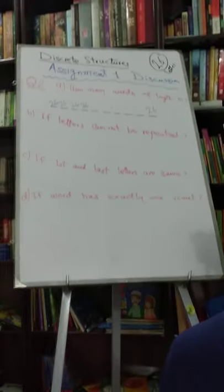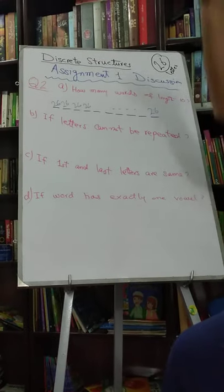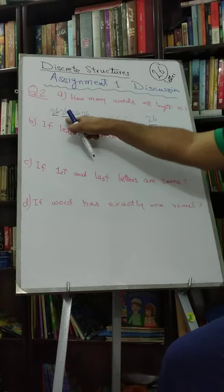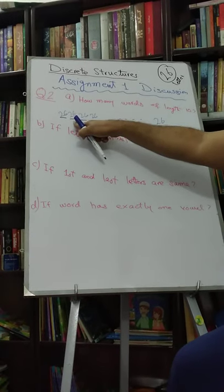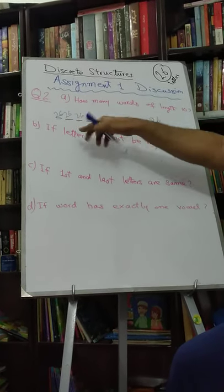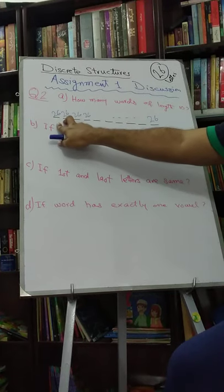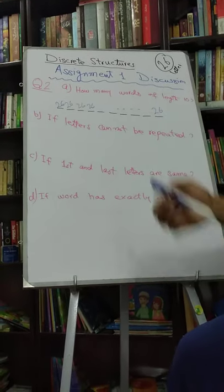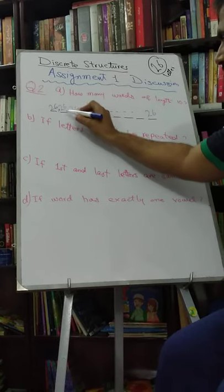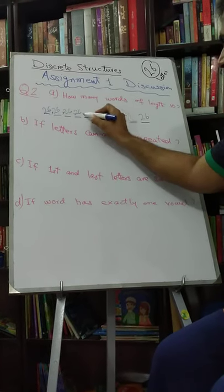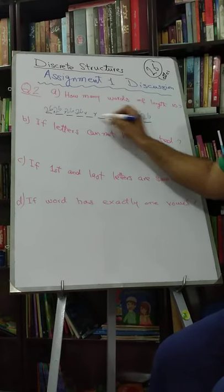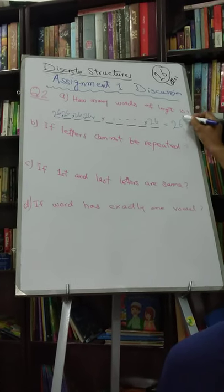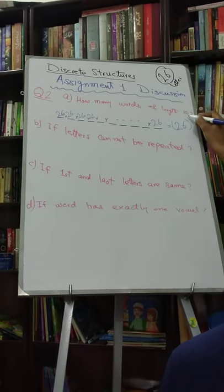Because corresponding to each first letter, we can choose any of the 26 letters for the second letter, for the third letter — again, corresponding to any pair of chosen ones, we can take any letter from 26, so everything gets multiplied. All these letters get multiplied, so the answer is pretty much easy.